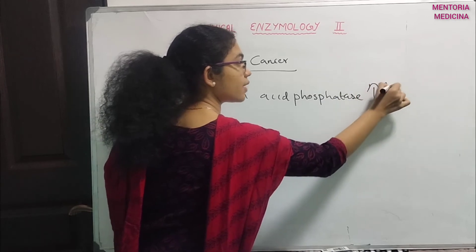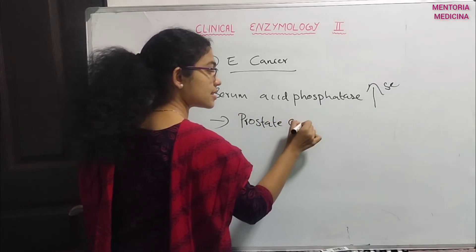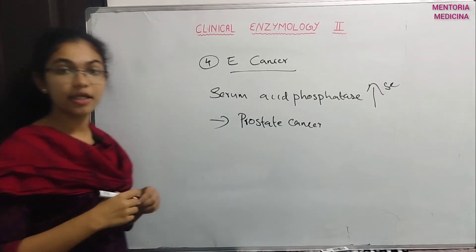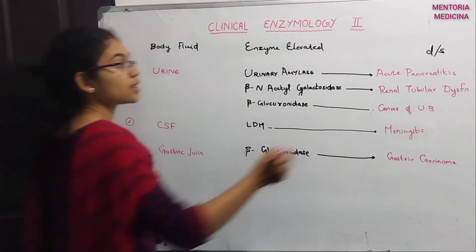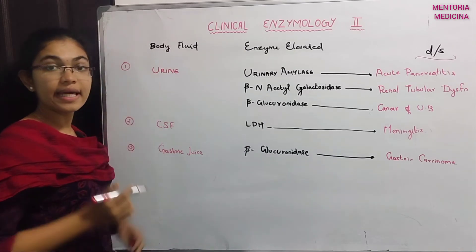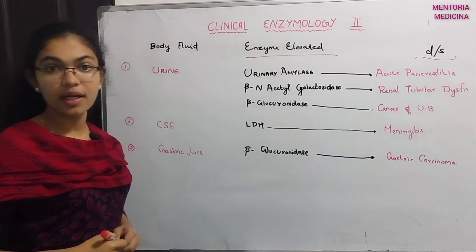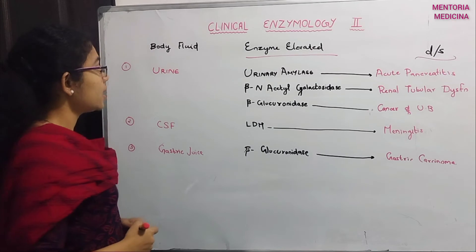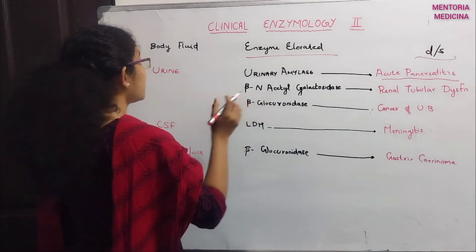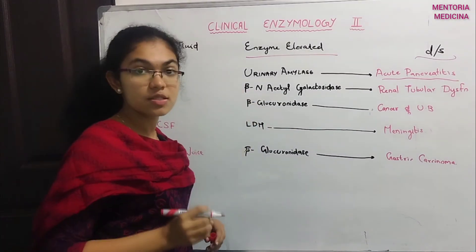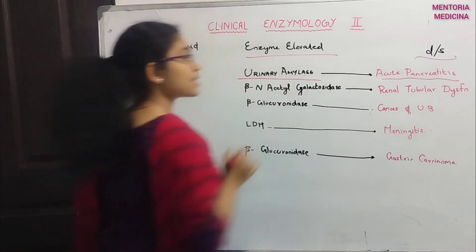If you want to elevate acid phosphatase, it indicates prostate cancer. These enzymes can be elevated in body fluids. For acute pancreatitis, we estimate urinary amylase enzymes in the patient.